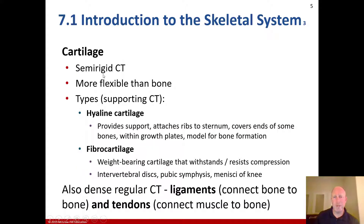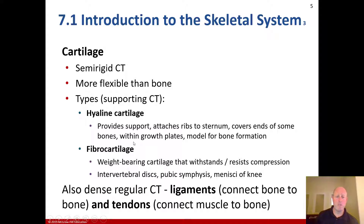Cartilage is semi-rigid connective tissue — it's more flexible than bone. Types within the skeletal system include hyaline cartilage, which provides support, attaches the ribs to the sternum, covers ends of some bones within the growth plates, and is a model for bone formation. Also fibrocartilage, which is weight-bearing cartilage that resists compression, found in the intervertebral discs, the pubic symphysis, and the menisci of the knee.